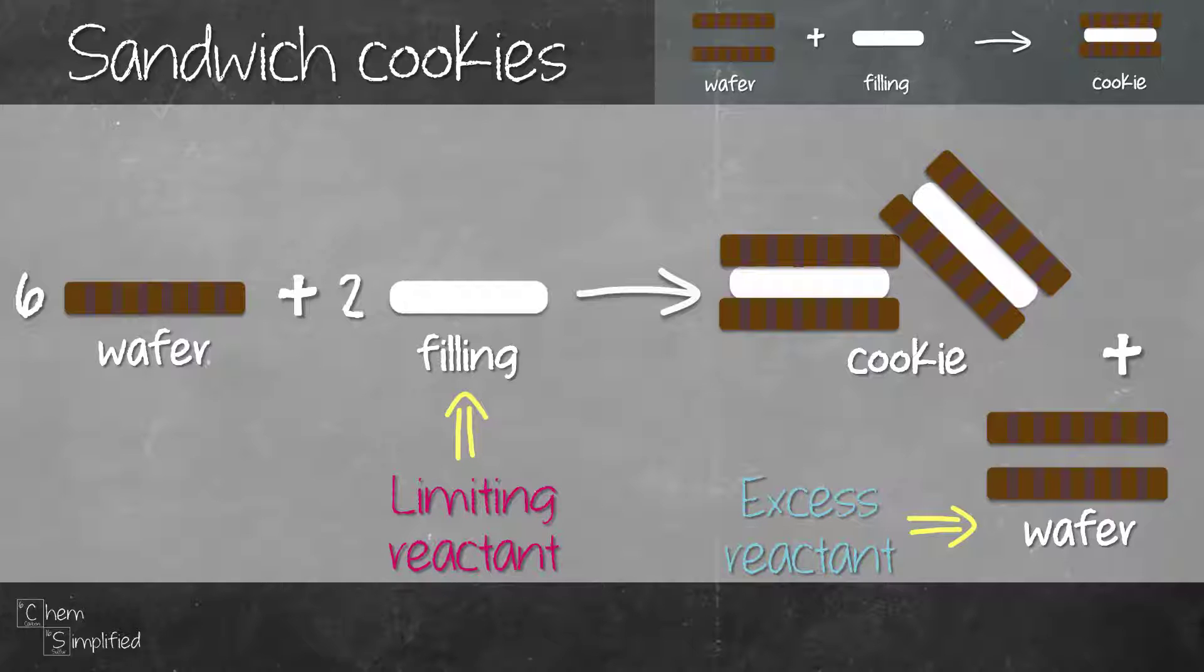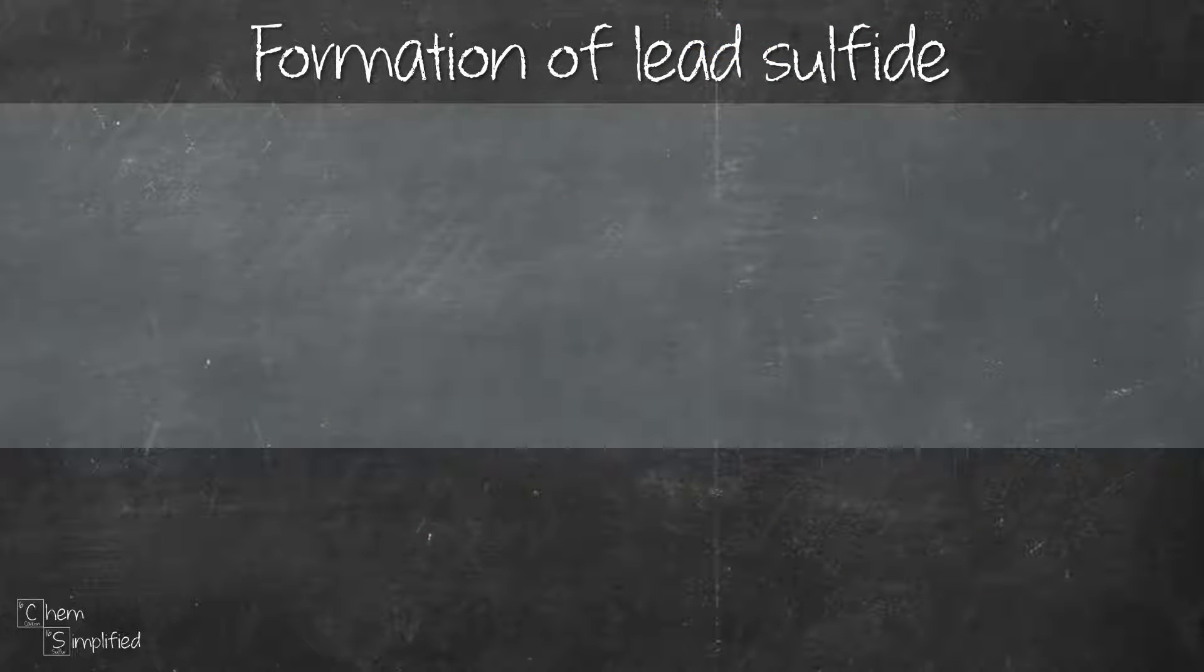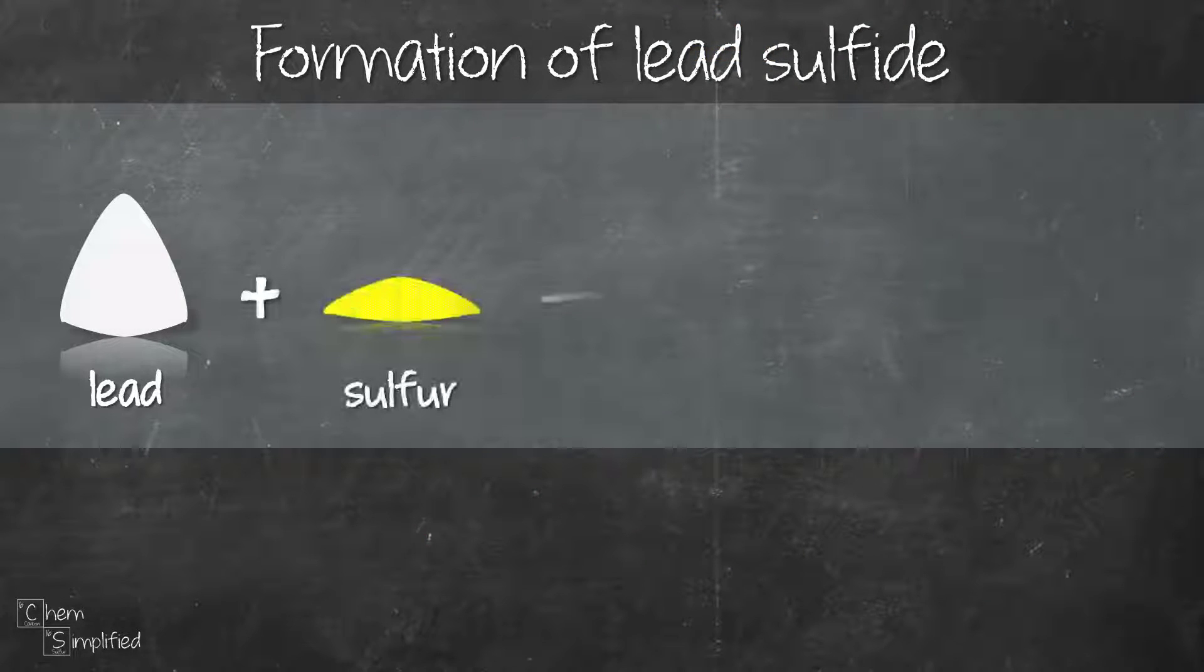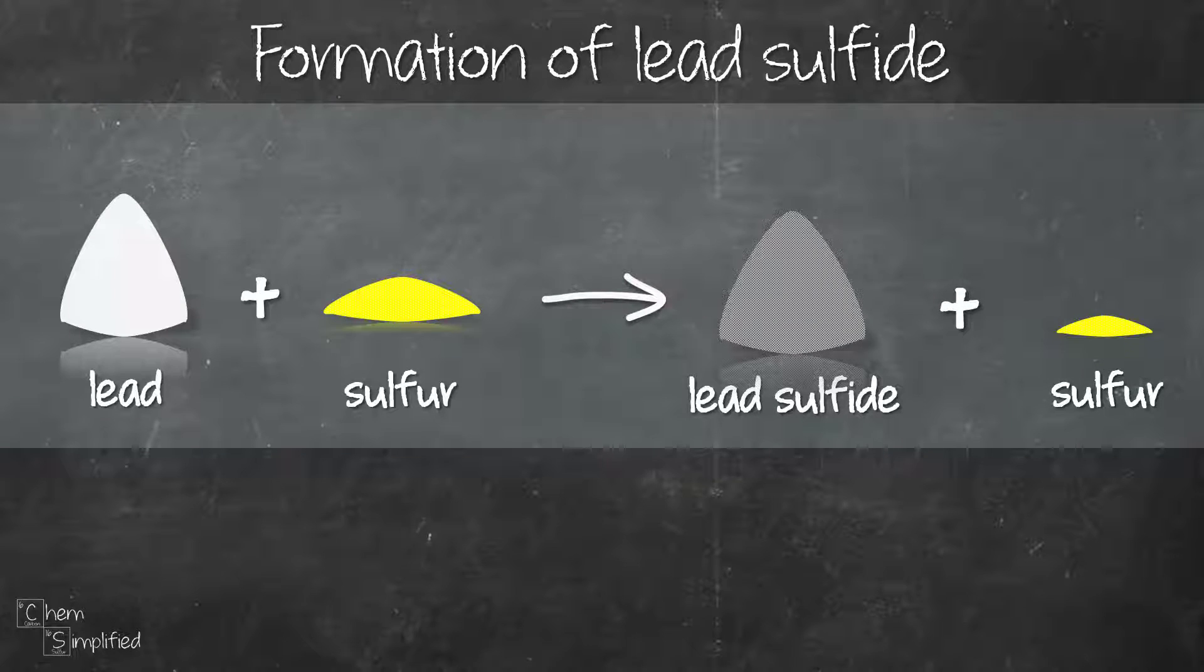This is an example using sandwich cookies. Now let's look at a chemical reaction, the formation of lead sulfide. We have lead plus sulfur giving us lead sulfide. If we have 5 grams of lead reacts with 1.5 grams of sulfur giving us 5.78 grams of lead sulfide and 0.72 grams of sulfur.